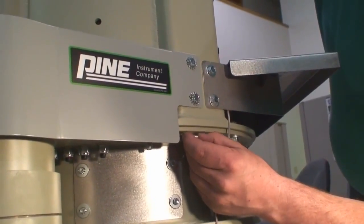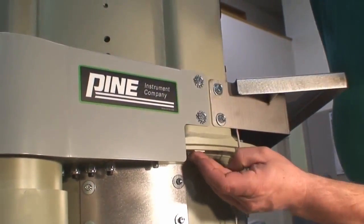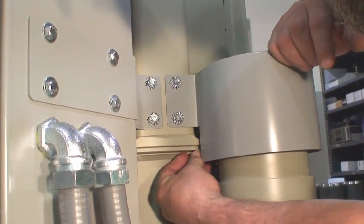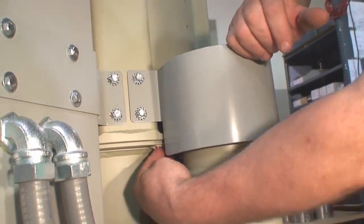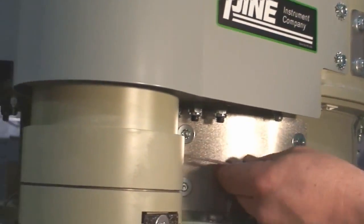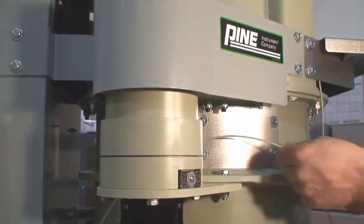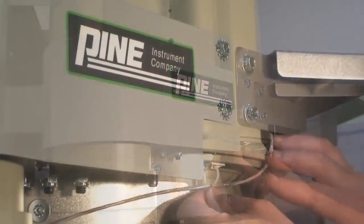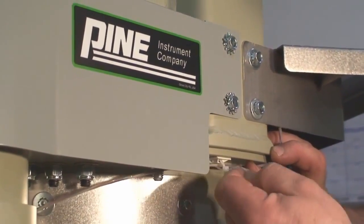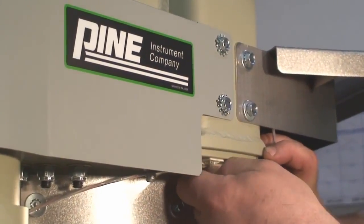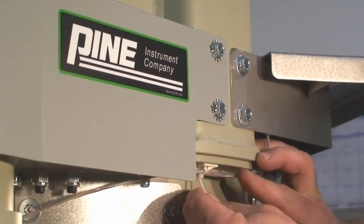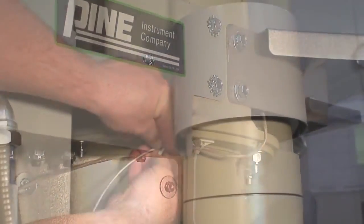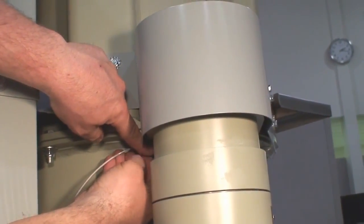Stick one of the adhesive backed cable anchors under the frame on the bottom of the machine close to the front and another one behind the actuator as shown here. Run the cable behind the actuator. Secure the cable to the front cable anchor using a wire tie, and secure it to the back cable anchor in the same way.